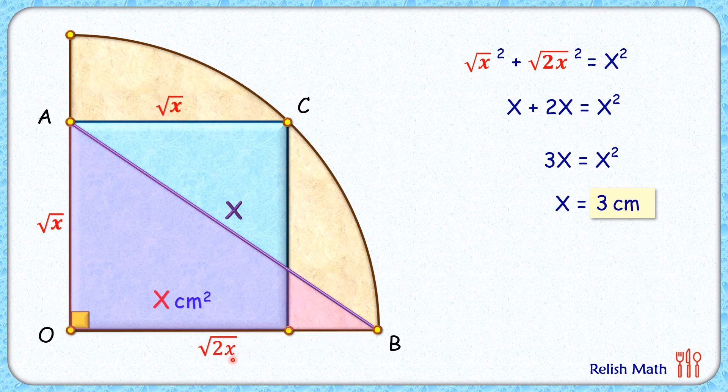Putting x as 3, we'll get radius as root 6 centimeter and that's our answer. I hope you enjoyed the video. I will see you in next video. Till then, tata bye bye.